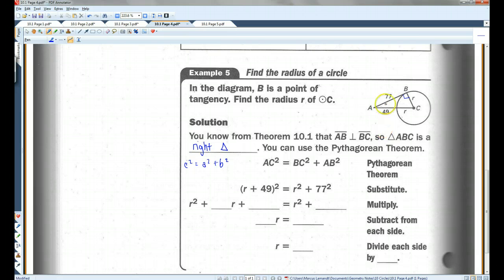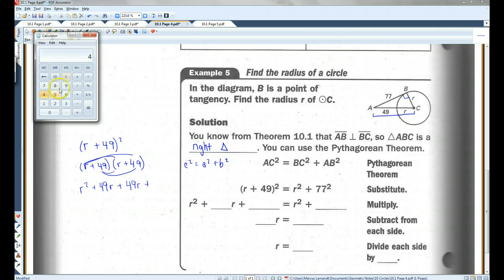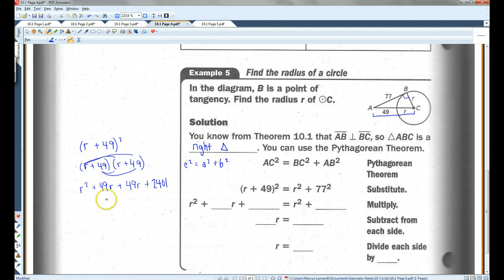AC is R plus 49. That's the whole hypotenuse. BC is R. AB is 77. This is where you're going to have to remember a few things from Algebra 1. R plus 49 squared is the same as R plus 49 times R plus 49. You're going to have to FOIL. I'm going to have R squared plus 49R plus 49R plus 49 squared, which is 2401. There, they have it already simplified.